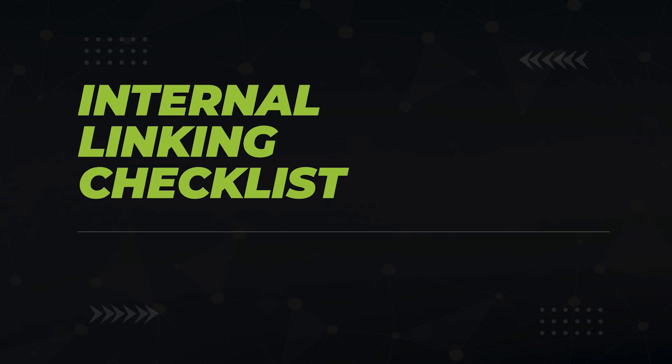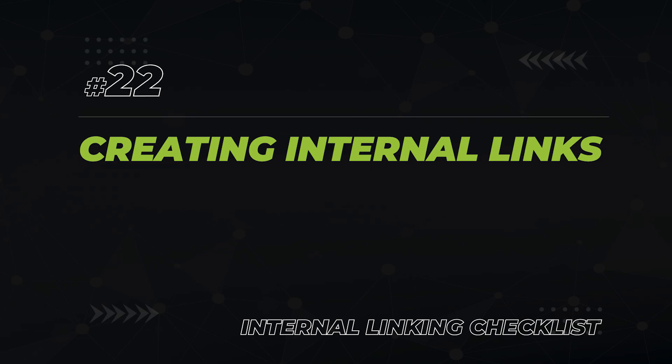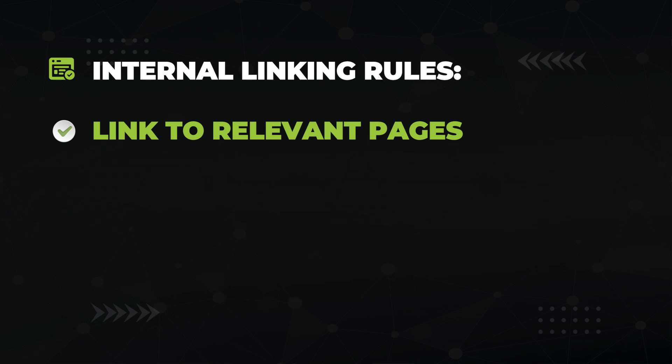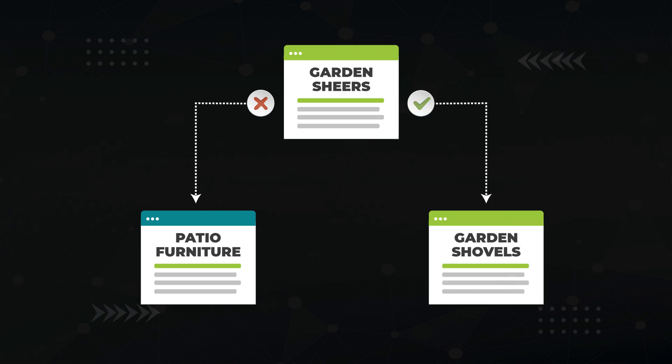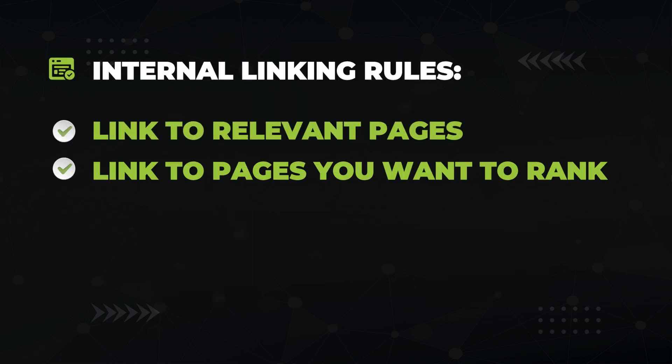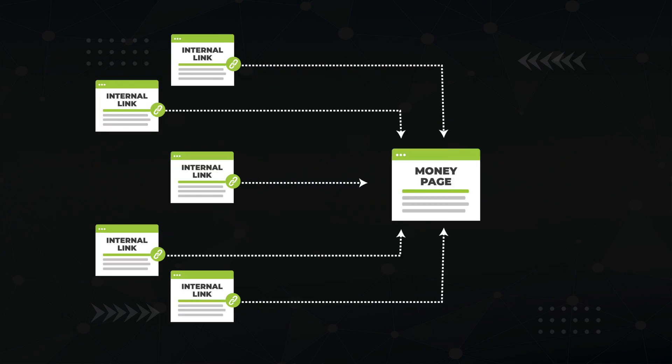Your next checklist focuses on internal linking — creating links between your articles on your own site. First, you want to interlink relevant pages together. There are three rules of thumb: first, only link pages that are relevant to each other — an article on gardening shears should not be linked to an article on patio furniture, but definitely link it to an article on garden shovels. Second, only link to pages you want to rank — don't send SEO love to unimportant pages. And lastly, link more to pages you really want to rank. A pillar page that is highly monetized should receive more internal links than a filler article.